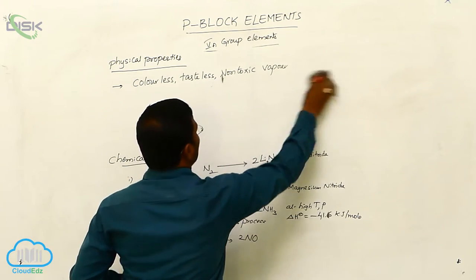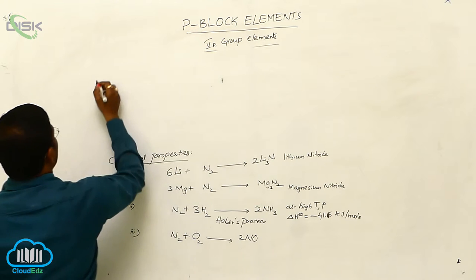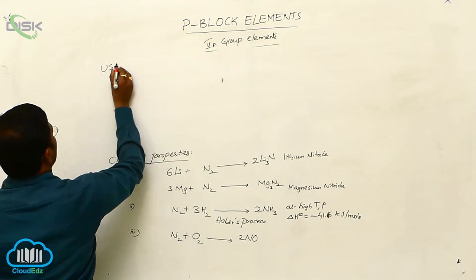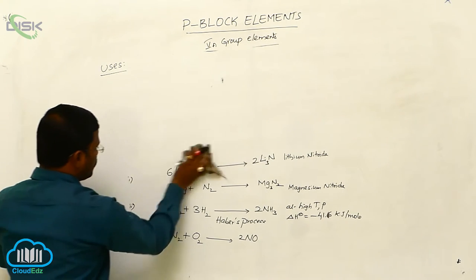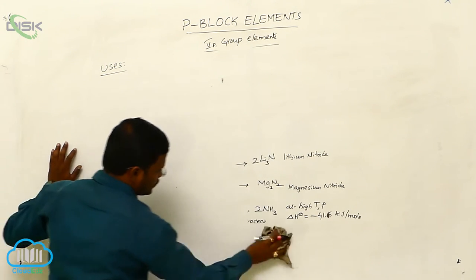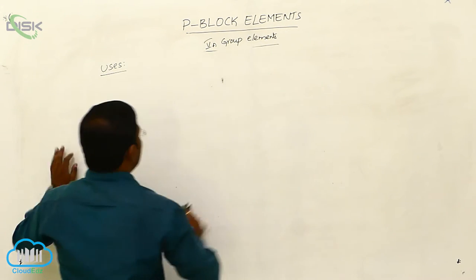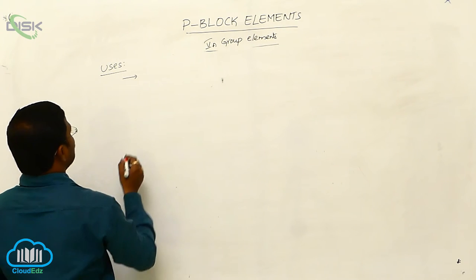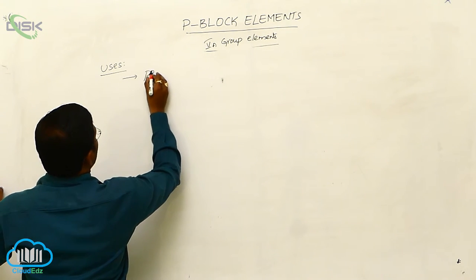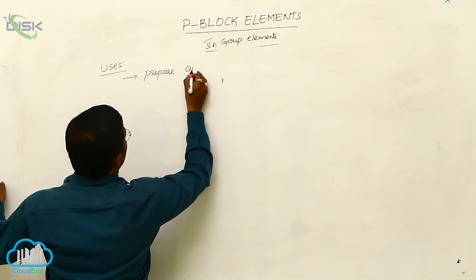Next, uses of dinitrogen. We have to learn what are the utilizations of nitrogen. The most important application of nitrogen is it is used to prepare ammonia in the manufacturing of ammonia.